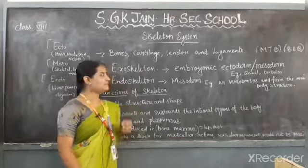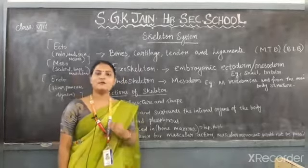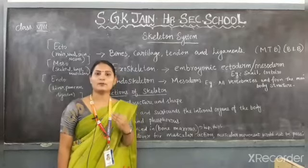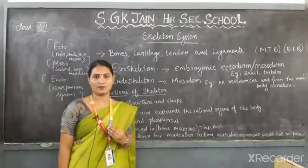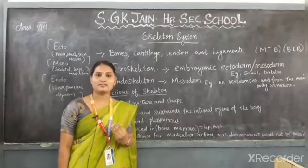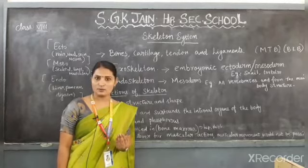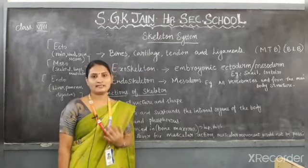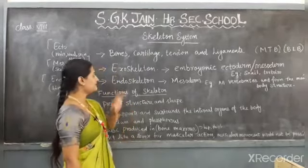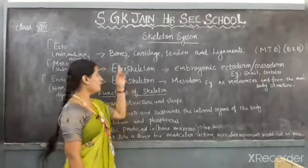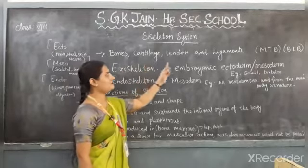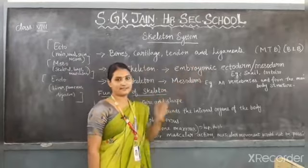Our skeleton system provides a framework structure to the body. It also supports our body and provides support and protection to our internal body parts. This skeleton system is made up of bone, cartilage, tendon, and ligaments.